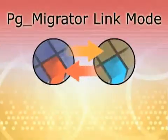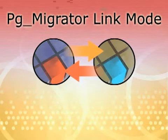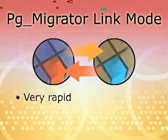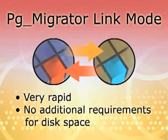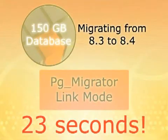Then he used pg_migrator's link mode. In link mode, the physical files are merely linked from the old database version to the new database version, meaning that it's very rapid and there's no additional requirements for disk space. In link mode, it took 0.44 minutes — roughly 23 seconds — to migrate a 150-gig database. And even if it was a multi-terabyte database, it wouldn't have taken more than an extra couple of seconds.